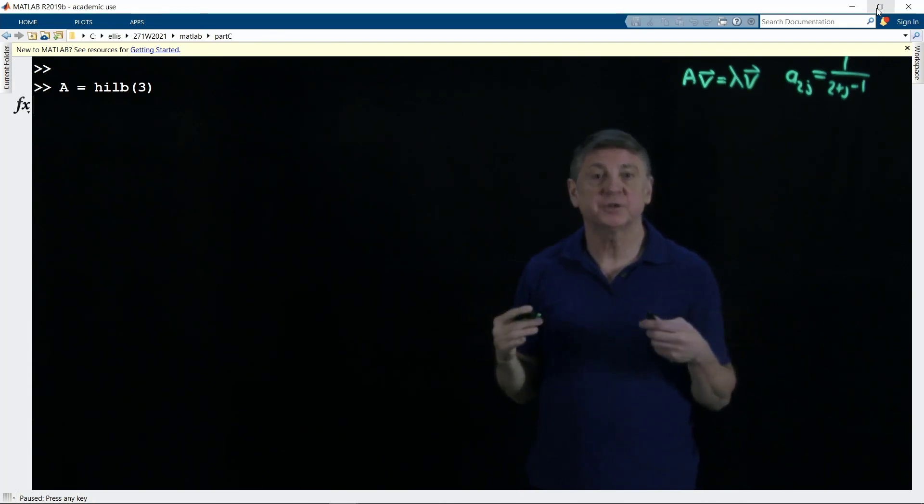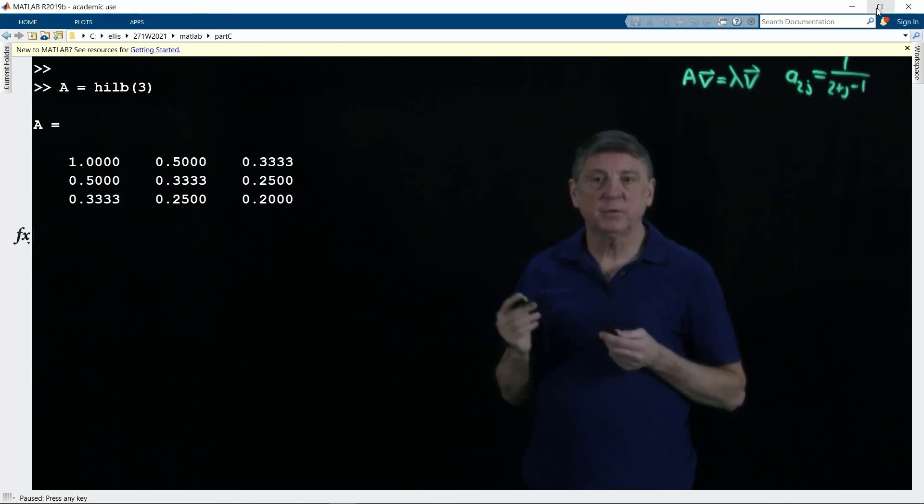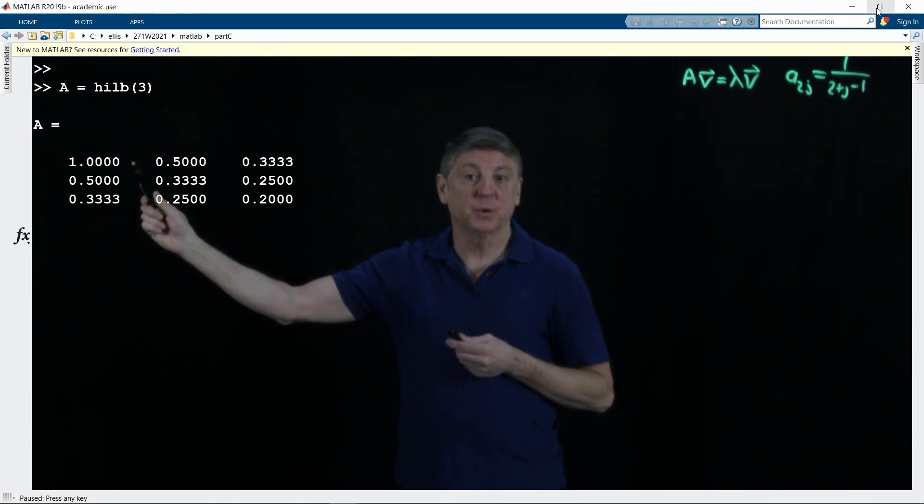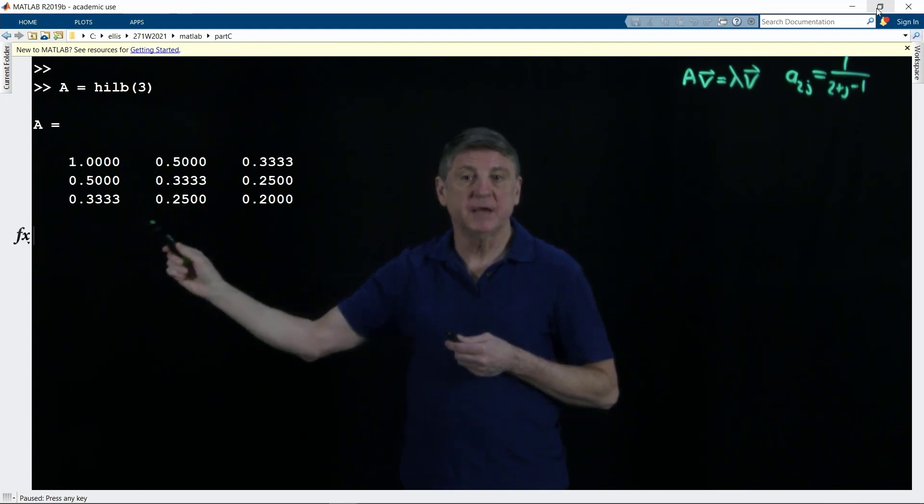And MATLAB, by the way, started out as the matrix laboratory. So let's compute this. And what we see is that entry 11 is 1 plus 1 minus 1, and that's 1 over that value. And then entry 12 and entry 21 are the same, and so on.